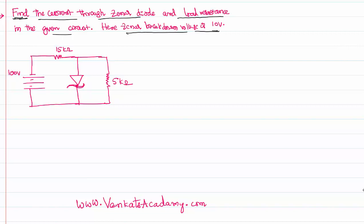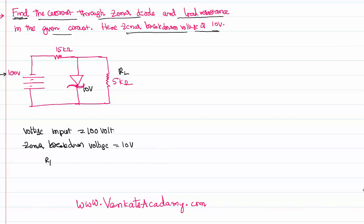Let's have a look at the circuit. It is given that the voltage at the input is 100 volts. The Zener breakdown voltage is 10 volts, which means it won't pass any voltage more than 10 volts as per the concept of Zener breakdown voltage. As the load resistance RL of 5 kilo ohms is in parallel with this Zener diode, the voltage across the load resistance is also 10 volts because they are parallel to each other. We have given 100 volts but only 10 volts is passing through both the Zener diode as well as the load resistance.